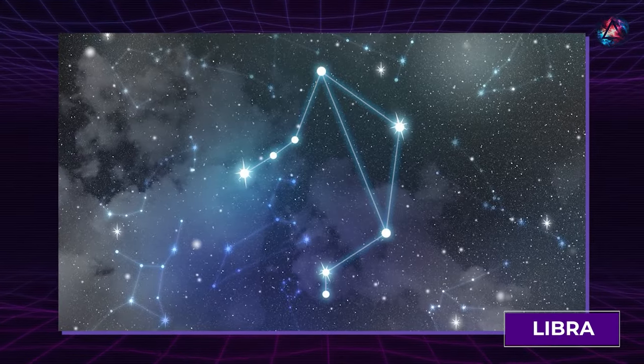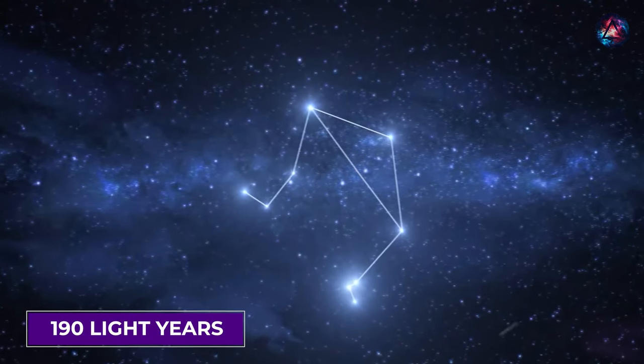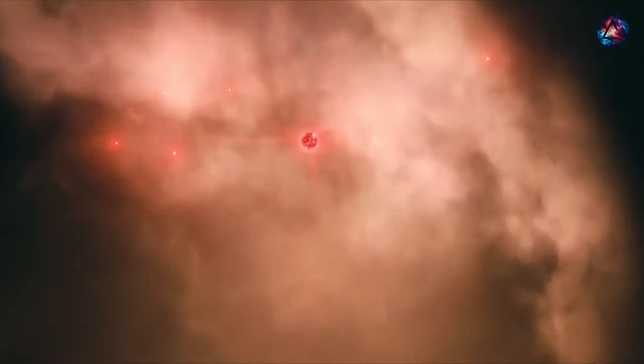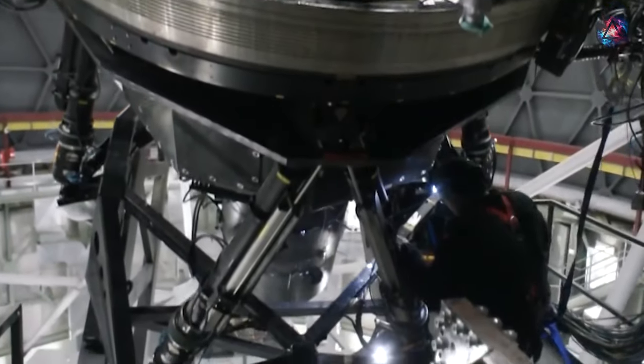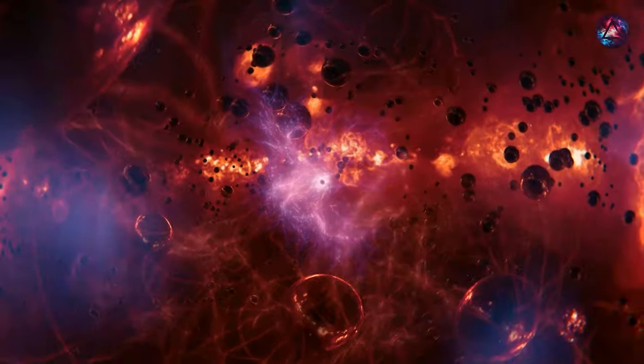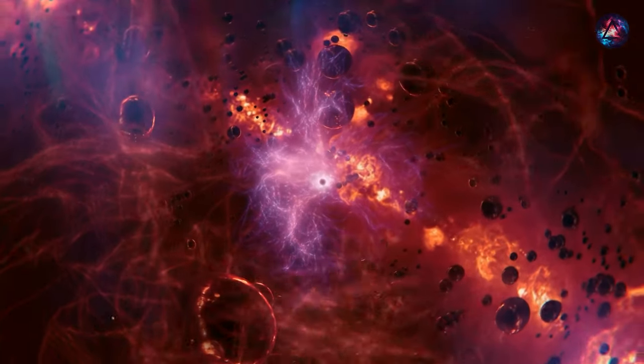Situated in the constellation Libra, approximately 190 light-years from Earth, this ancient star is intriguing due to its age and proximity. While it can be observed with binoculars from Earth, the peculiar aspect is that its age seemingly surpasses that of the universe.